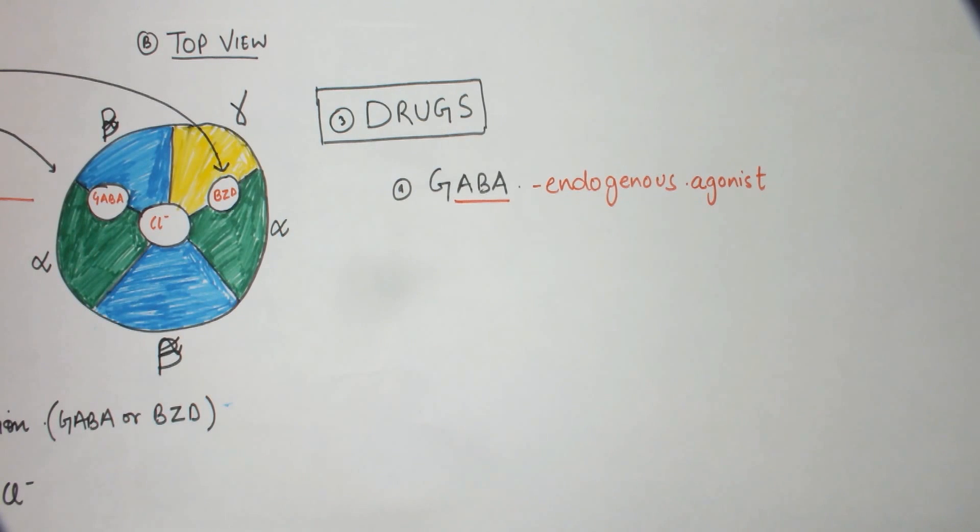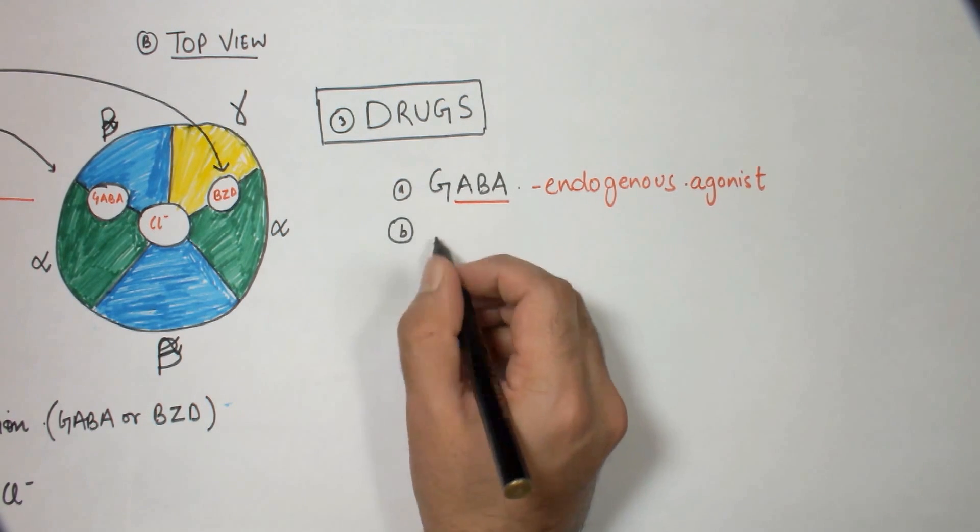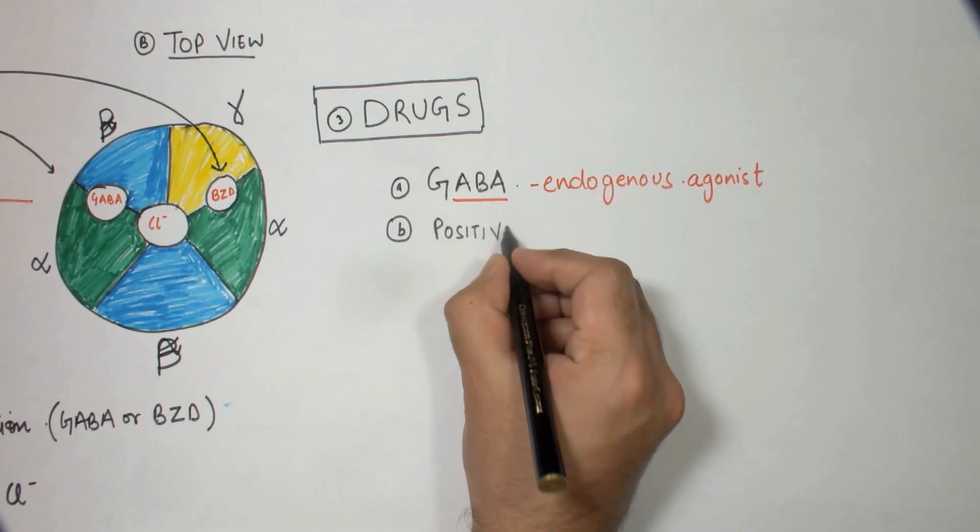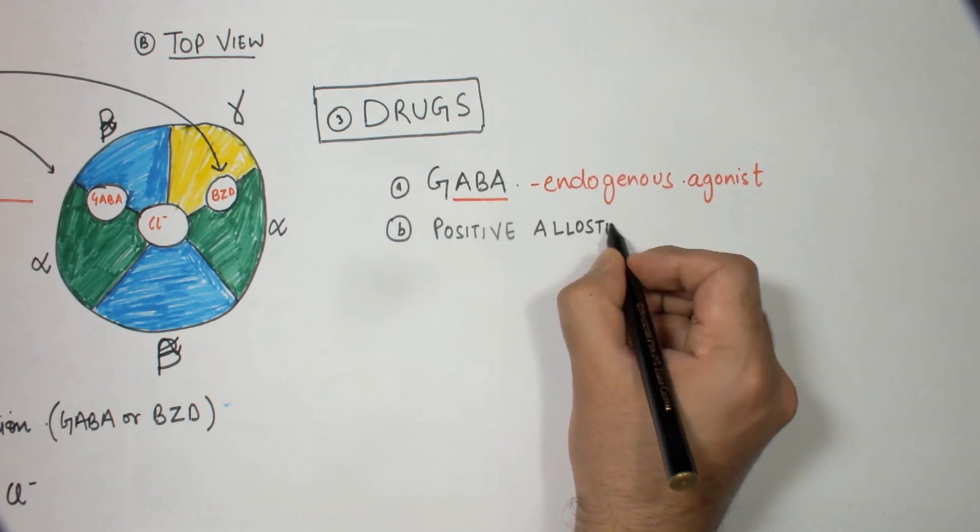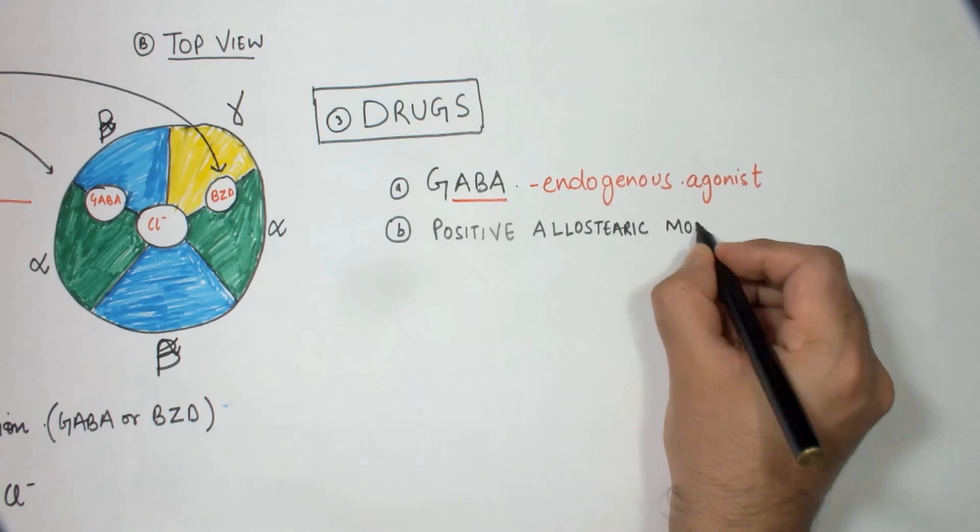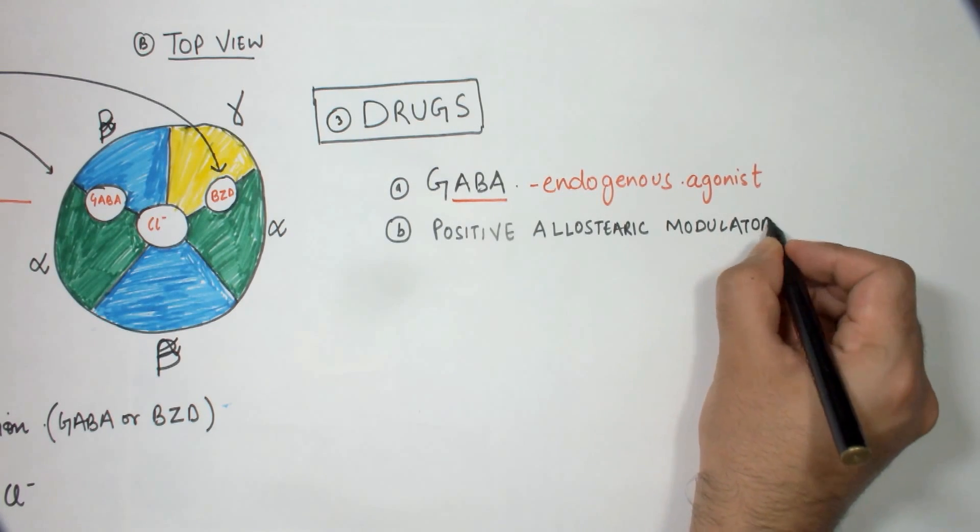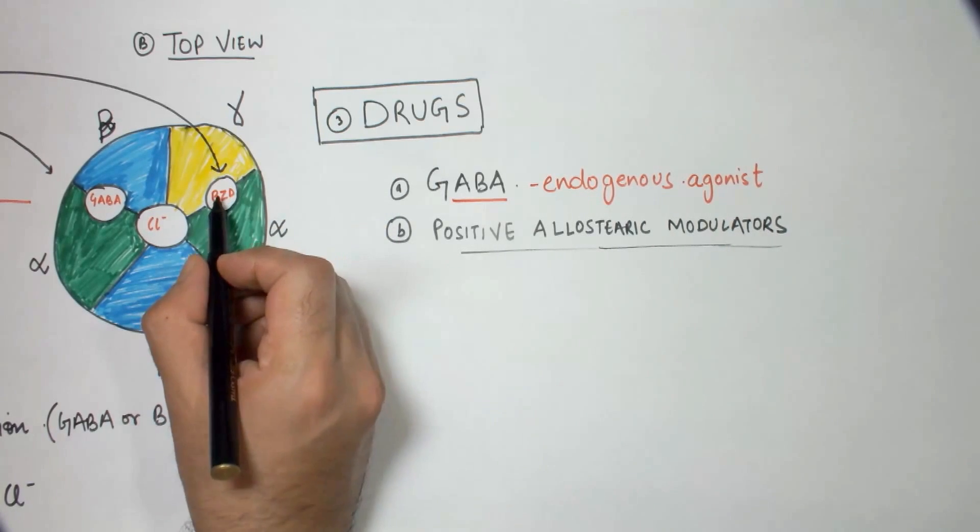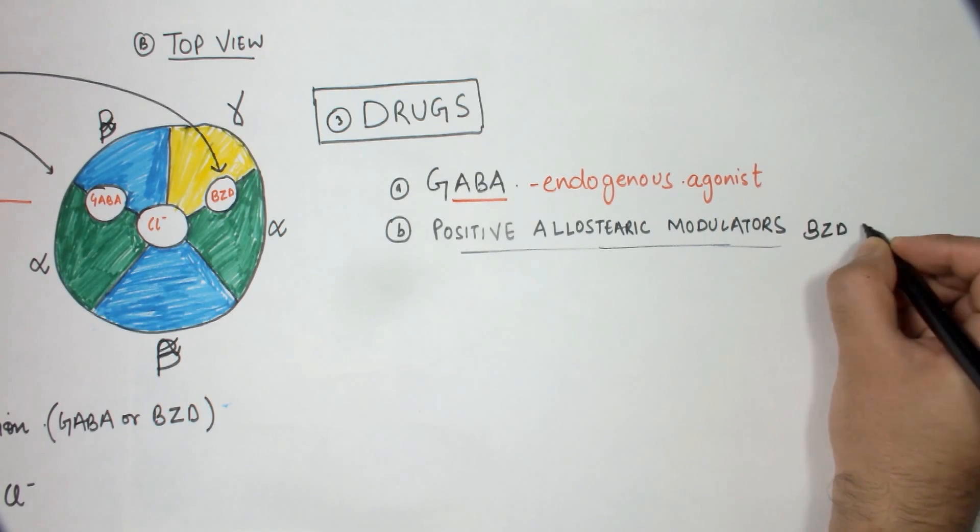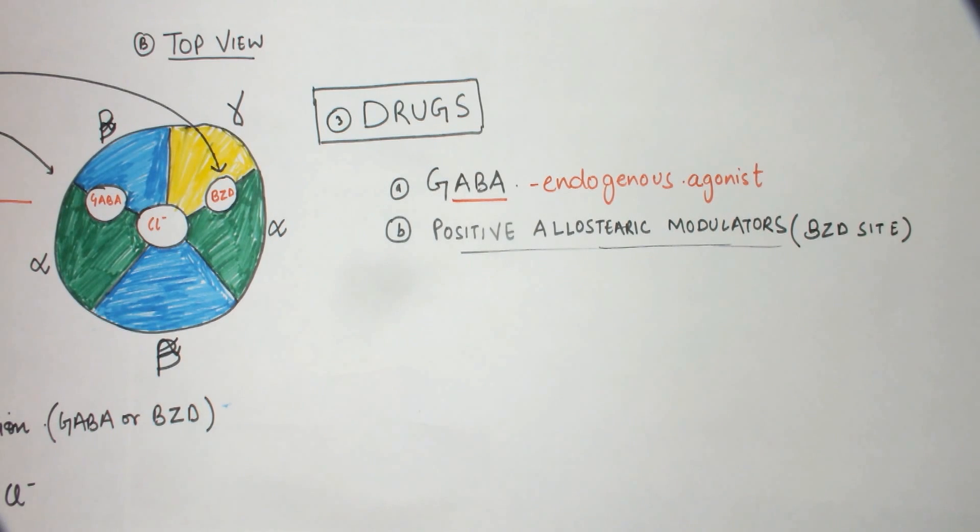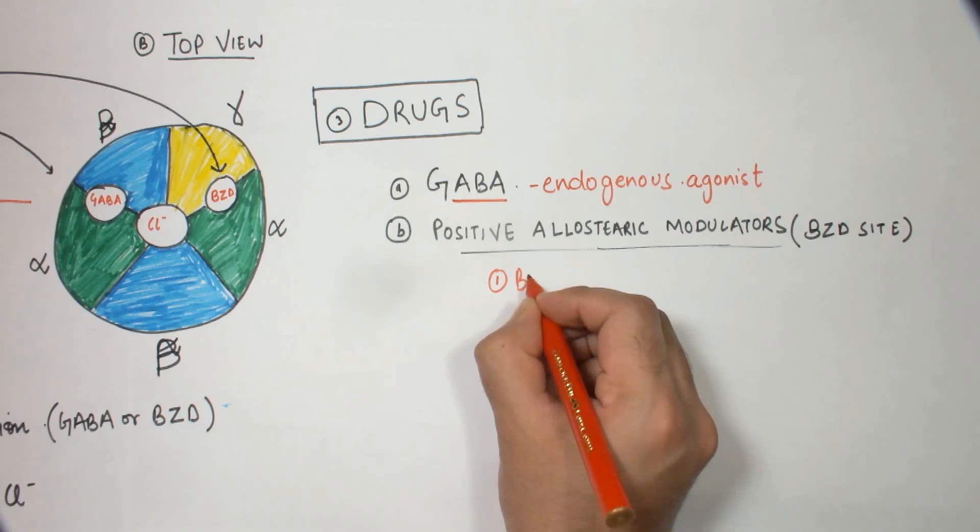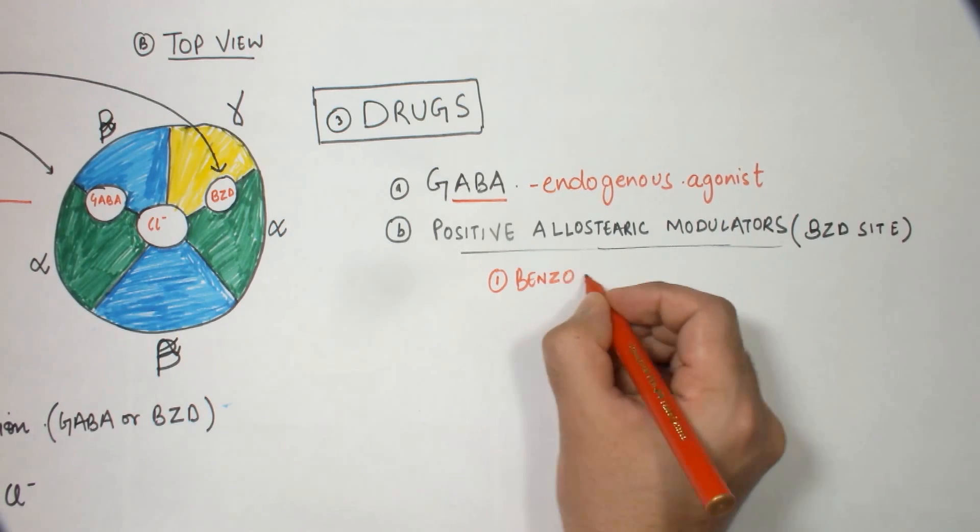Now the second class of drugs that we will discuss are grouped as positive allosteric modulators. These drugs bind to the benzodiazepine binding site and cause the same chain of events. In this category, first of all we have the benzodiazepines: diazepam, clonazepam. These act on the benzodiazepine binding site; they are the positive allosteric modulators.